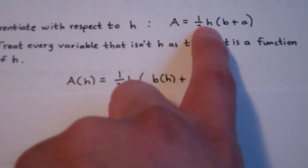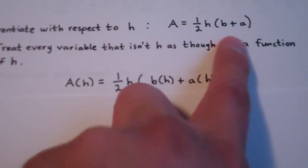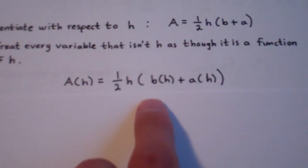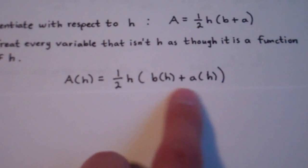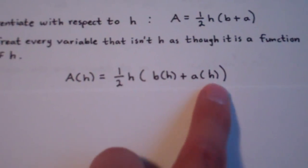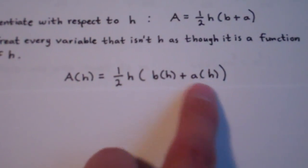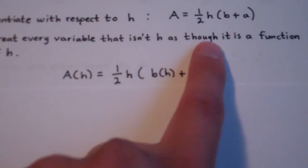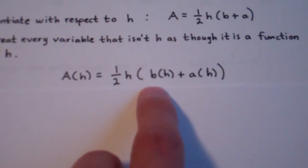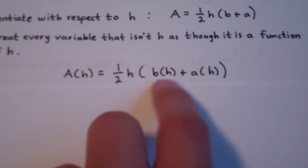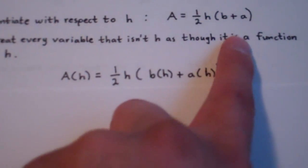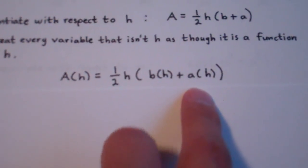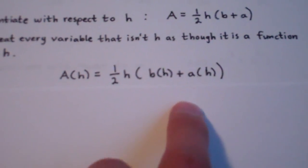And we have two other variables here, b and a, and I rewrote both of those variables also as functions of h. So rather than b, I have b of h, and rather than a, I have a of h.